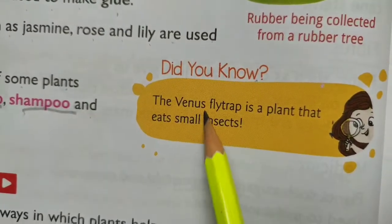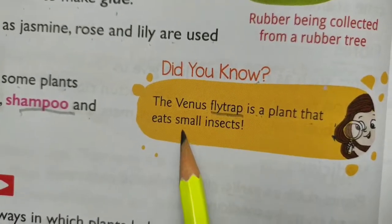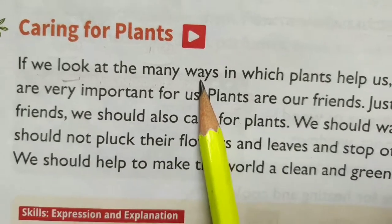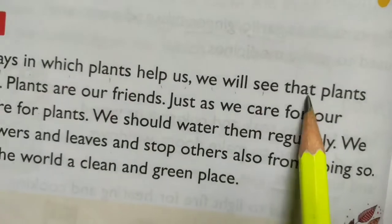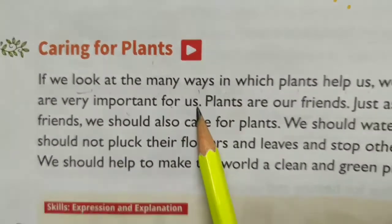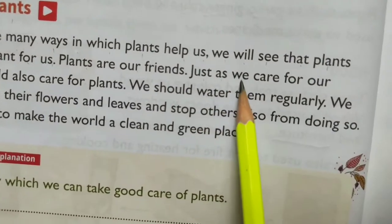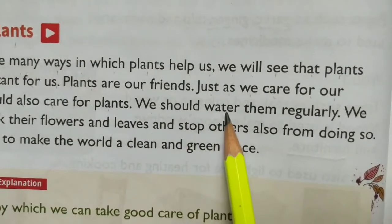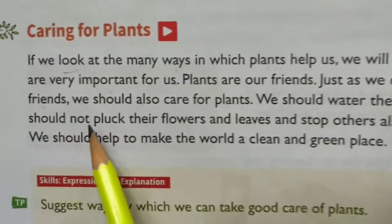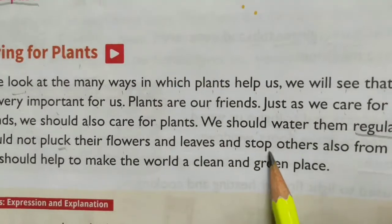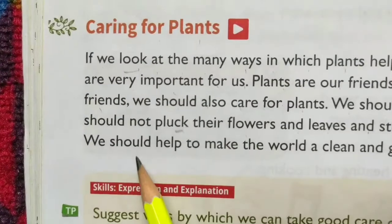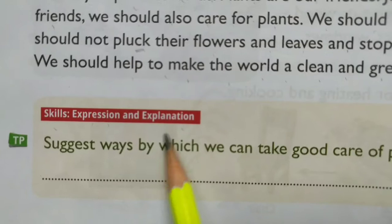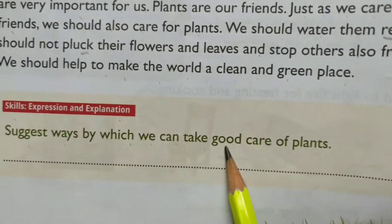Did you know? The Venus flytrap is a plant that eats small insects. Caring for plants: If we look at the many ways in which plants help us, we will see that plants are very important for us. Plants are our friends. Just as we care for our friends, we should also care for plants. We should water them regularly. We should not pluck their flowers and leaves, and stop others from doing so. We should help to make the world a clean and green place. Suggest ways by which we can take good care of plants.